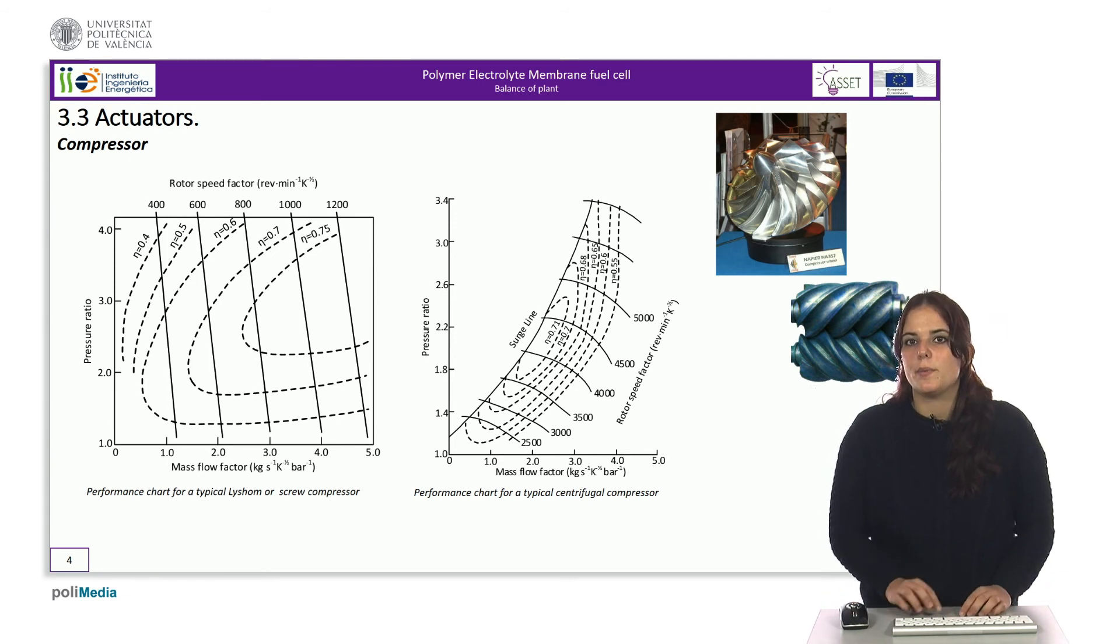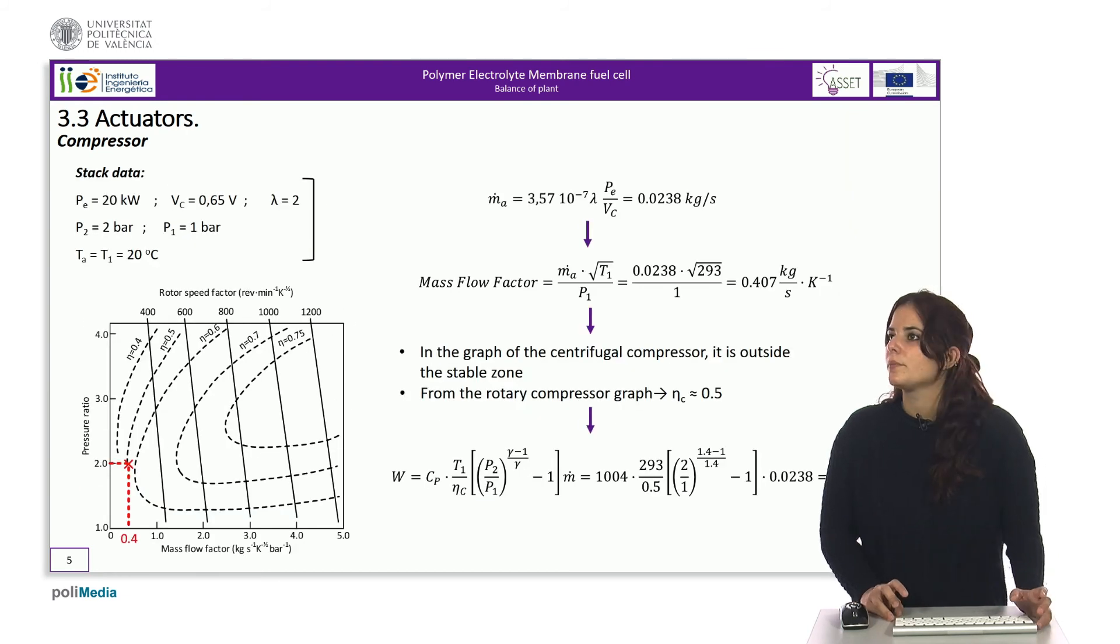From this value, the required compressor power can be calculated once we know the compressor efficiency. Let's see a simple example.